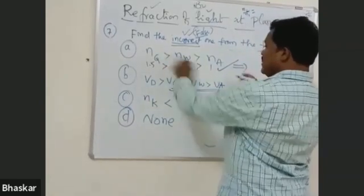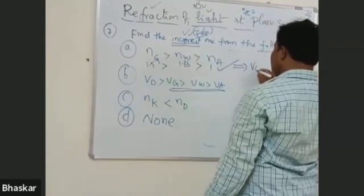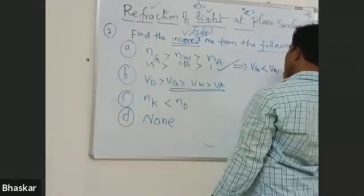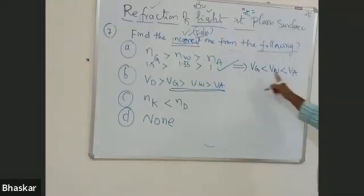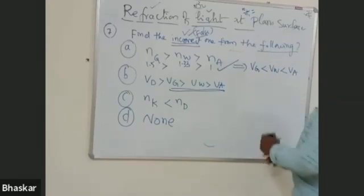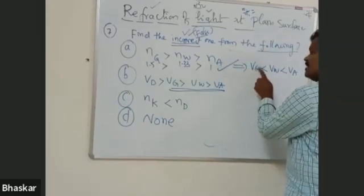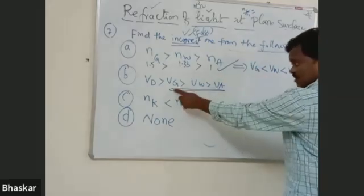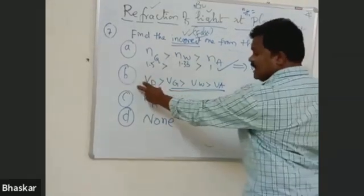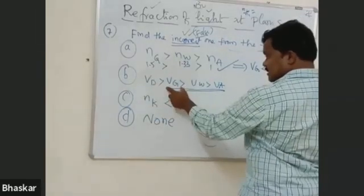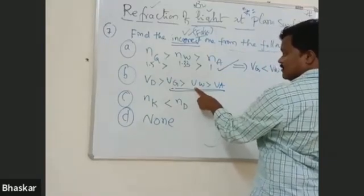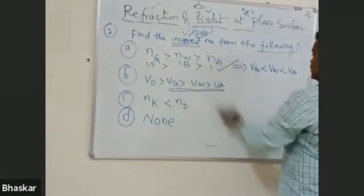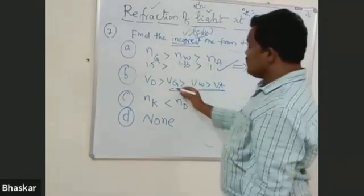The correct statement of velocity. The velocity is less than VW. VW is less than VW. So, this is what is the value of VW. This is the actual value of VW. And, velocity of light in glass, that is the value of VW.